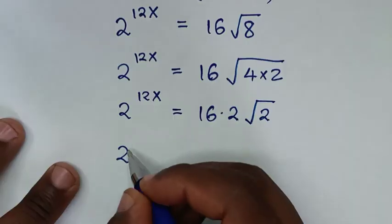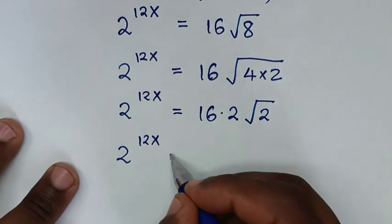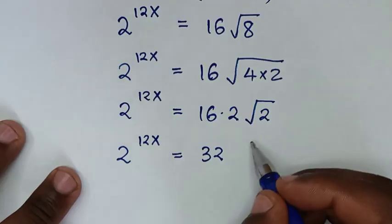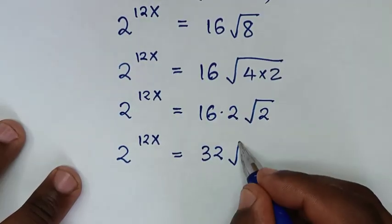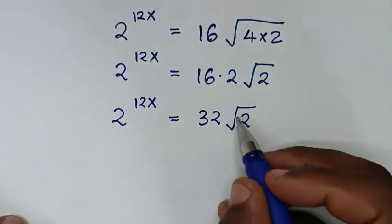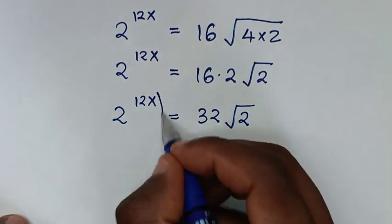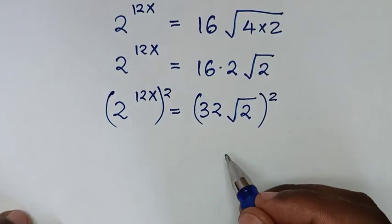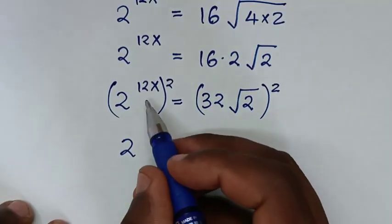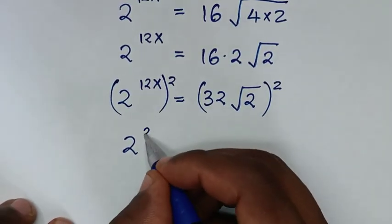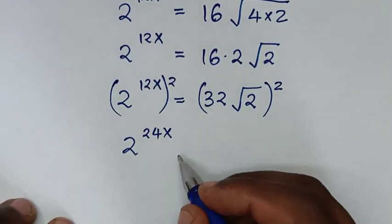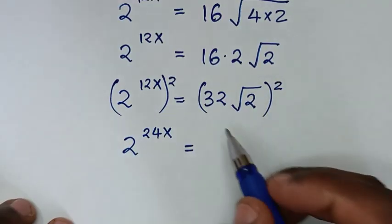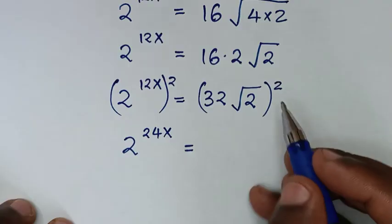So 2^(12x) equals 16 times 2, which is 32, times the square root of 2. To remove this square root of 2, we square both sides again, giving us 2^(24x) on the left. On the right, we take 32 squared times the square root of 2 squared.